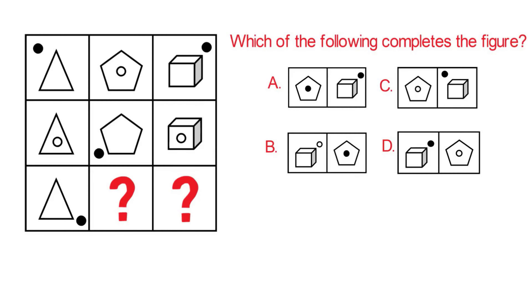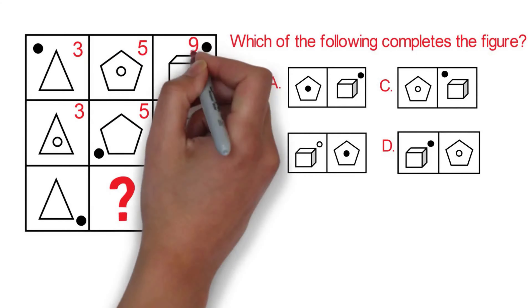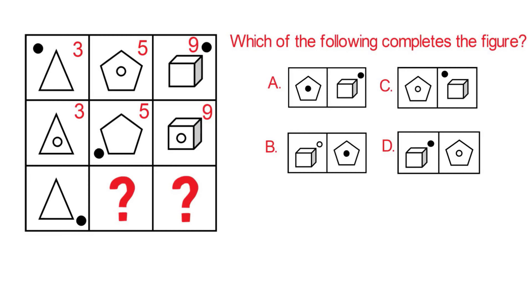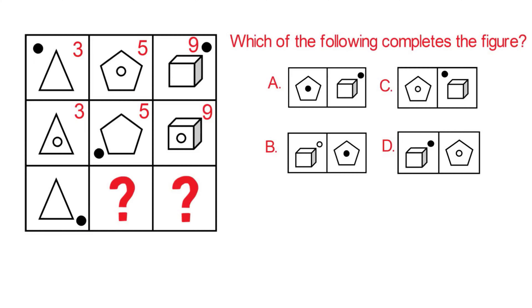The first pattern is that the shapes' lines are in order: three, six, and nine lines — triangle has three lines, pentagon has five lines, and cube has nine lines. The second pattern is that the small circle inside the shape alternately rotates from being inside to outside the shape. The third pattern is that the black circle outside the shape also changes its location. Following these patterns and looking at the possible choices, the correct answer to this challenge is choice C.